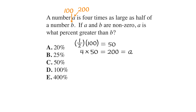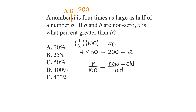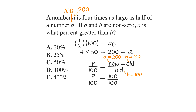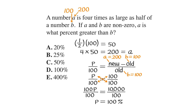Now the question asks: A is what percent greater than B? Using the percentage difference formula, the old value is B and the new value is A. Plugging in B equals 100 and A equals 200, we get p over 100 equals 100 over 100. Cross-multiplying gives 100p equals 10,000. Dividing both sides by 100, p equals 100%, which is choice D.